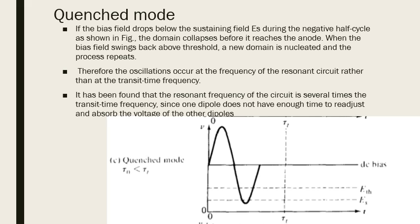The third mode is the quenched mode, which is exactly opposite to the delayed mode. Here, the transit time mode period is shorter than the oscillation period — tau-not is less than tau-T. The negative half cycle swings below the sustaining field, quenching the domain before it reaches the anode. Efficiency is approximately 13 percent. When the bias swings back above the threshold, a new domain attempts to form, which leads to the next mode — the LSA mode.